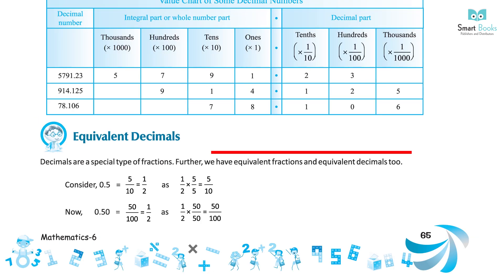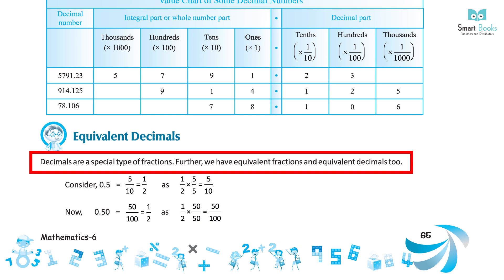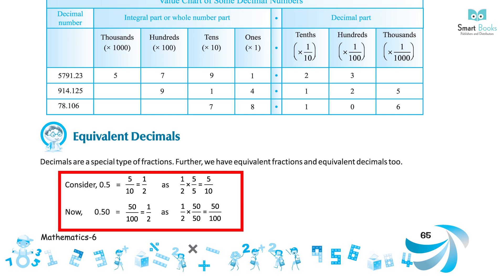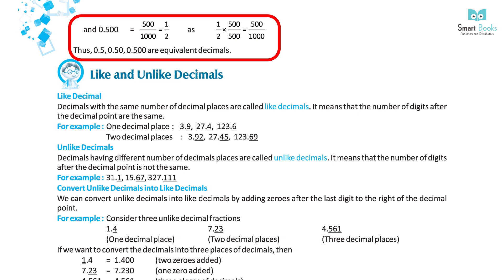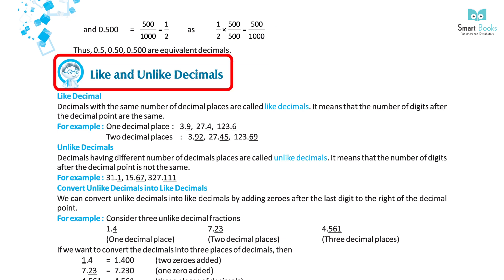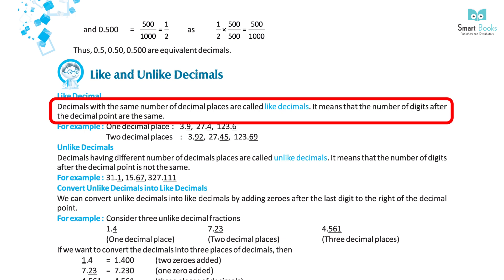Equivalent Decimals: Decimals are a special type of fractions. We also have equivalent fractions or equivalent decimals. Consider: 0.5 equals 5 upon 10, which equals 1 upon 2. Similarly, 0.50 equals 50 upon 100, which also equals 1 upon 2. And 0.500 equals 500 upon 1000, which also equals 1 upon 2. Thus 0.5, 0.50, and 0.500 are equivalent decimals.